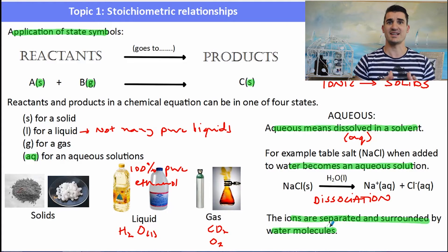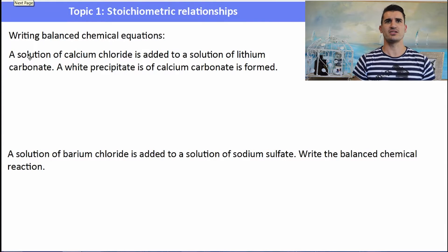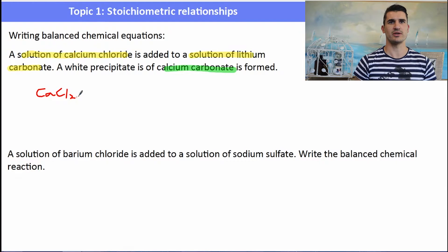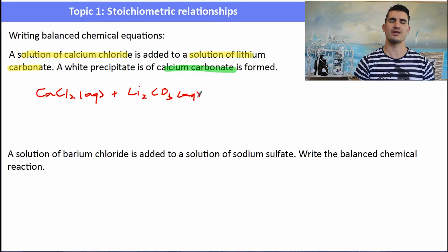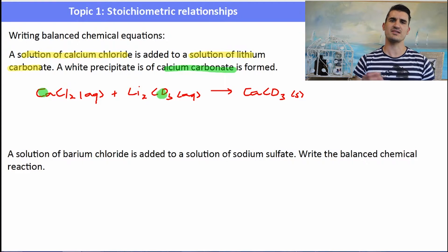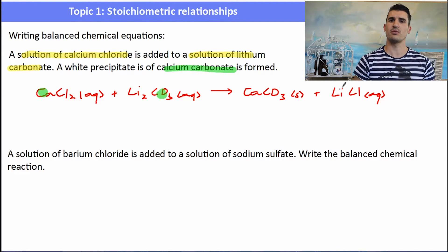A solution of calcium chloride is added to a solution of lithium carbonate, and a white precipitate of calcium carbonate is formed. Calcium chloride is CaCl2 (aqueous), plus lithium carbonate Li2CO3 (aqueous), goes to calcium carbonate CaCO3 (solid precipitate). We also have leftover lithium and chlorine — lithium is Li plus and chloride is Cl minus, giving LiCl. Since we have two lithiums on the left, we put a two in front of LiCl to balance the equation.